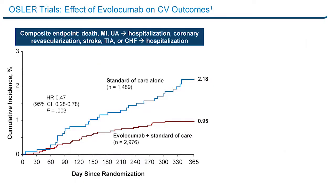In terms of cardiovascular outcomes, we looked at a composite of death, myocardial infarction, unstable angina requiring hospitalization, coronary revascularization, stroke, transient ischemic attacks, or heart failure leading to hospitalization. There was a striking 50% reduction in the incidence of this composite cardiovascular outcome. Interestingly, the curve started diverging early — within three months or so — and continued to separate over time. This involved only about 50 to 60 events, not the primary goal of this extension study, but nonetheless very reassuring data.